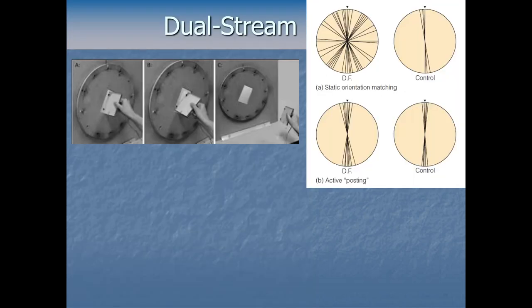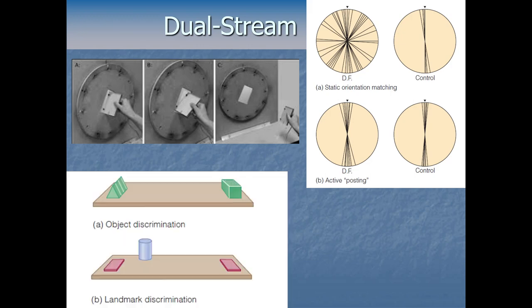Neuropsychologists have studied patient DF, who could align a card to go through a rotated slot when actually inserting it — so her dorsal stream or vision for action system was functioning fine when performing the action. But she couldn't match the orientation when just looking at it statically. There's actually a double dissociation here: other neuropsychology patients with damage lower in the brain, in the more ventral zone, can recognize an angle in static and moving tasks just fine, but when using vision for action — reaching out, using the where-how system — they can't orient a card to put it through a slot.